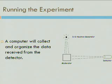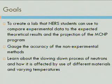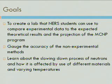Currently, we have not run the experiment, but we will be doing so later this month. The goals are to create a lab that NERS students can use to compare experimental data to the expected theoretical results and the projection of the MCNP code. By comparing the actual experimental data to our textbooks and the computer program, we can gauge the accuracy of these non-experimental methods and learn if we can depend on them for future similar projects.